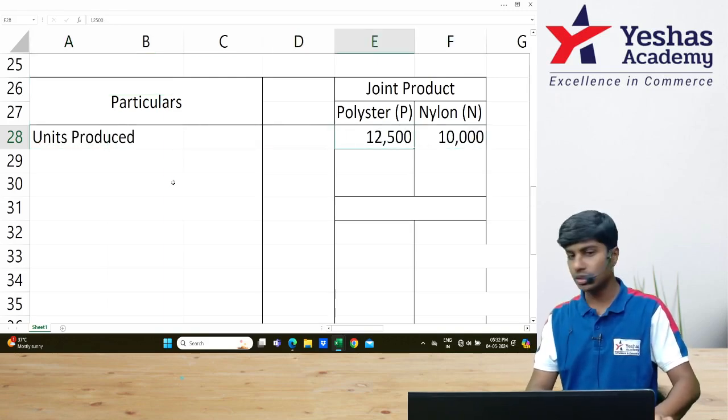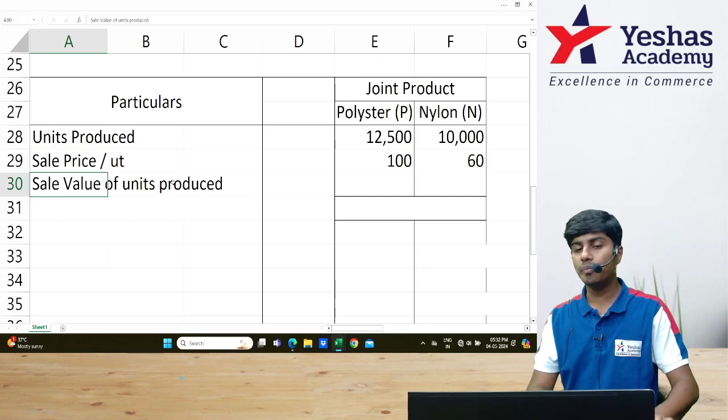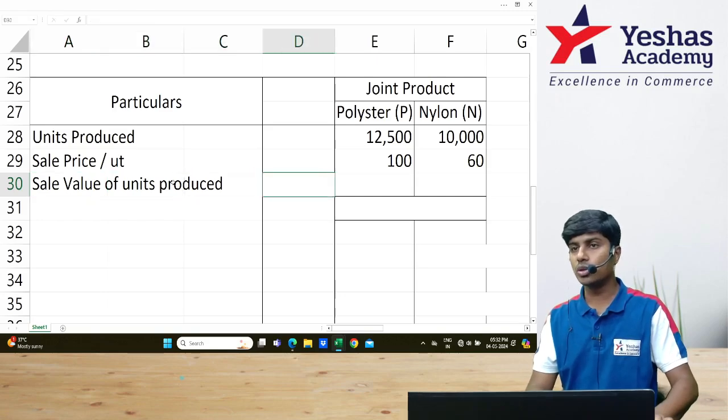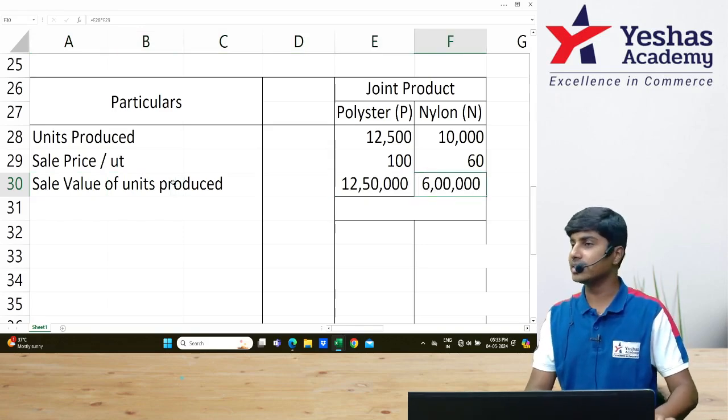Units produced: 12,500 and 10,000. Selling price per unit is ₹100 and ₹60. How much is sales value? Sales value is 12,500 into 100—₹12,50,000. 10,000 into 60—₹6,00,000.